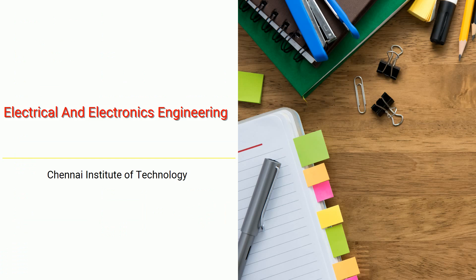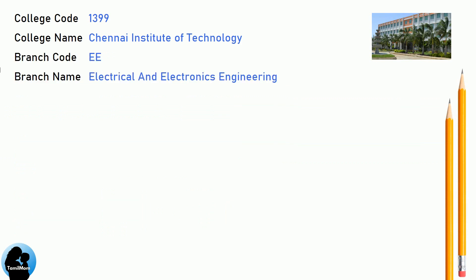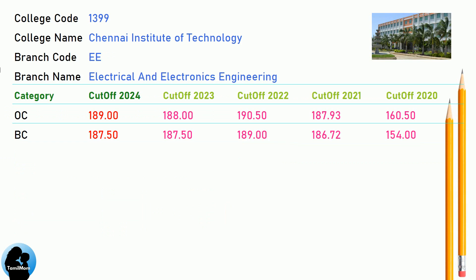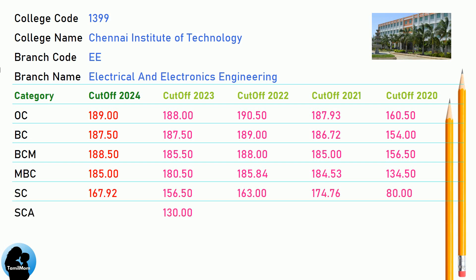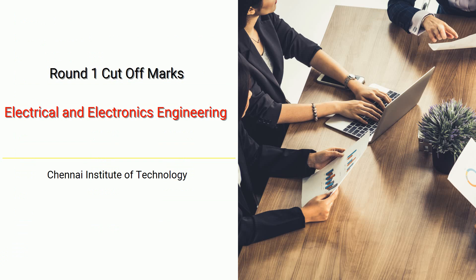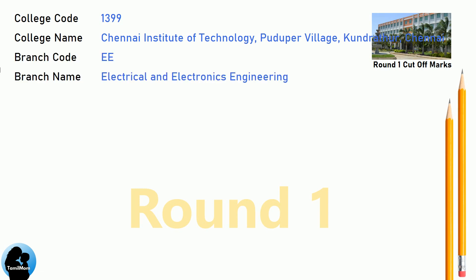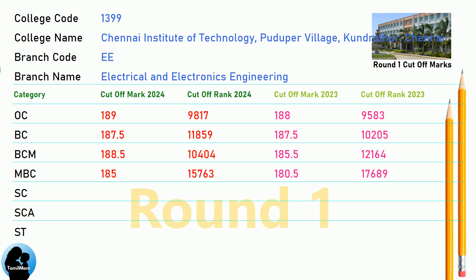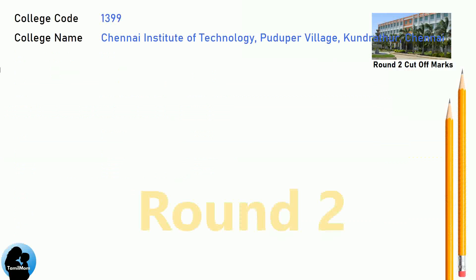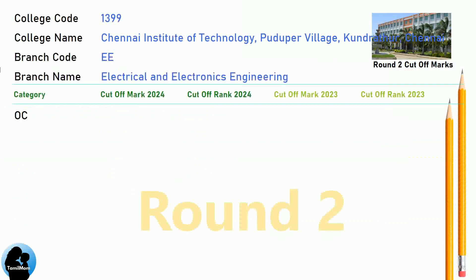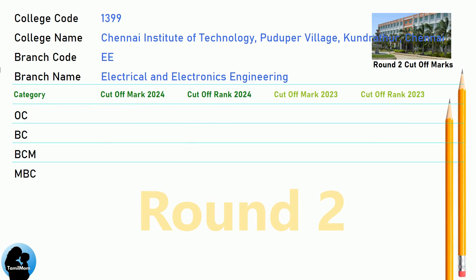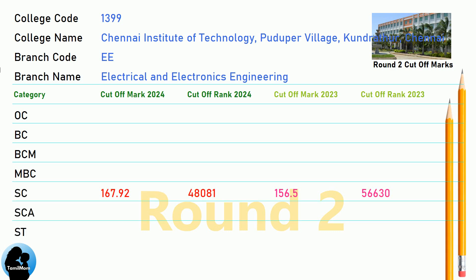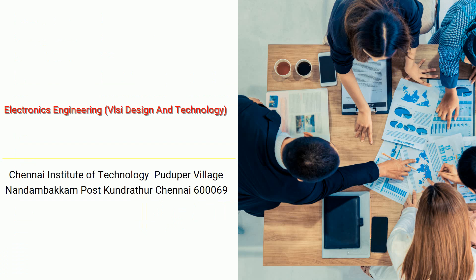DNA Cut-off for Chennai Institute of Technology in Electrical and Electronics Engineering. DNA Round 1 Cut-off and Round 2 Cut-off for Chennai Institute of Technology in Electrical and Electronics Engineering.